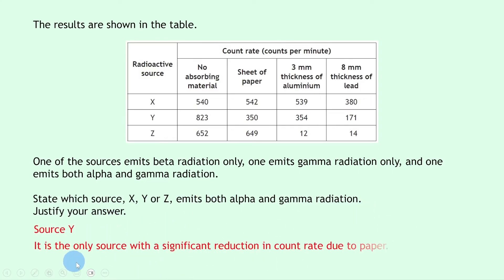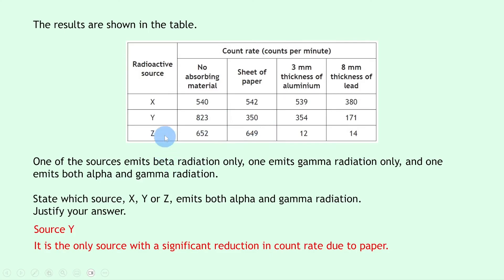The answer is source Y, because it is the only source with a significant reduction in count rate due to paper. Source X has an initial count rate of 540, and when paper is placed in the way, it only goes up by 2 to 542, so paper has no real effect. Source Z similarly shows only a decrease of 3 with paper. But source Y starts at 823 counts per minute, and when paper is placed in the way, the count rate drops by a large amount to 350, meaning alpha radiation is being absorbed by the paper. So sources X and Z do not contain alpha, and it must be Y that contains both alpha and gamma.